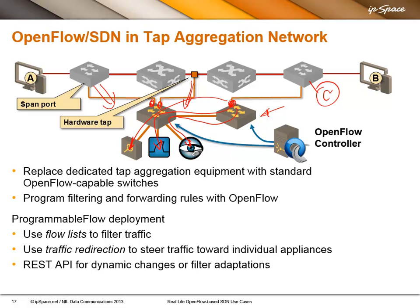It's really easy to implement the filtering and forwarding rules with OpenFlow. In particular, if you use ProgrammableFlow, they have a concept called Flow Lists, which is really a combination of access control lists and route maps. The Flow Lists can do pass, drop, or traffic redirection — which is what we need here to forward traffic to individual appliances. The beauty of this approach is that you can use the REST API of the ProgrammableFlow controller to program these filters, or log into the controller and use their configuration language to program the Flow Lists directly.